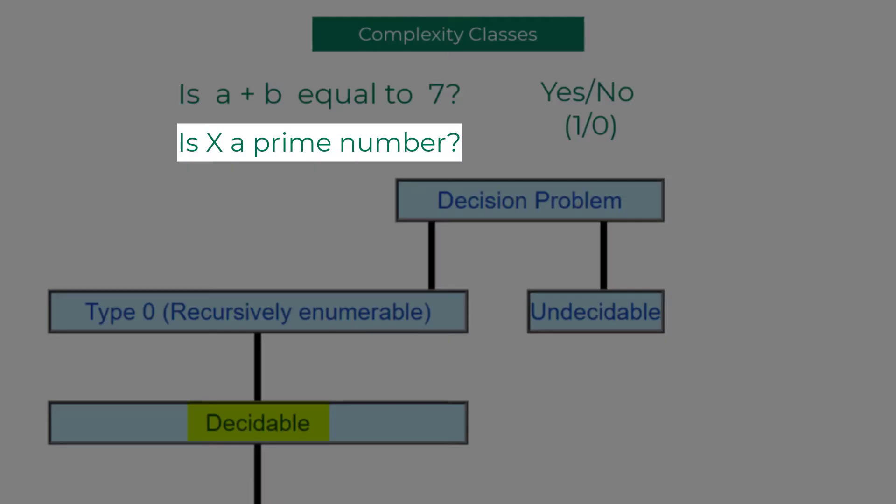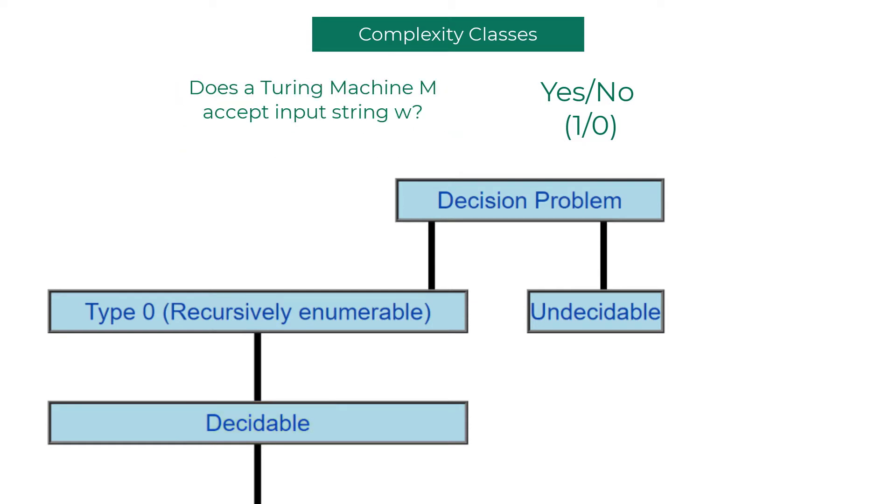But as you can see, one of these problems is more complex than the other. Now, does a Turing machine M accept input string W? If W is in the language of the Turing machine M, we would know the answer, hence it is recursively enumerable. But we already proved that this problem is undecidable based on diagonalization technique. So it is recursively enumerable but undecidable, meaning you cannot confidently say that a word W is not in the language of the Turing machine M. Hence the problem 'does a Turing machine M not accept input string W' is completely undecidable.